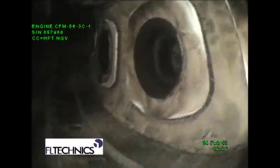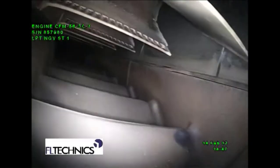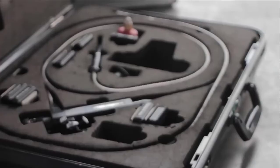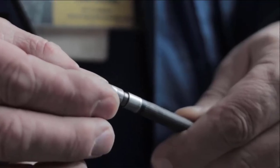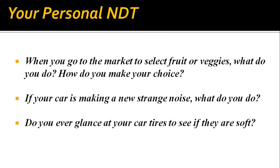Let's take a few examples of how we perform non-destructive testing in our day-to-day life. When you go to the market to select fruit or vegetables, you look at the fruits and vegetables and based on color and freshness, you decide what to buy. This is an example of visual testing. If your car is making a strange new noise, you might glance at your car tires to see if they are worn. You can relate these examples to non-destructive testing — you are not destroying anything, but you are inspecting.